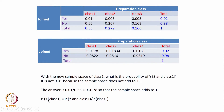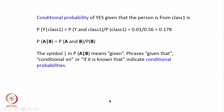Probability of joining given class 1 is 0.0178, which is P(joining and class 1) = 0.01, divided by 0.56. So this is the conditional probability of joining given that they went to class 1 — P(joining and class 1) divided by P(class 1), which is 0.01 divided by 0.56 = 0.0178. P(A given B) equals P(A and B) divided by P(B) — this is the conditional probability equation.